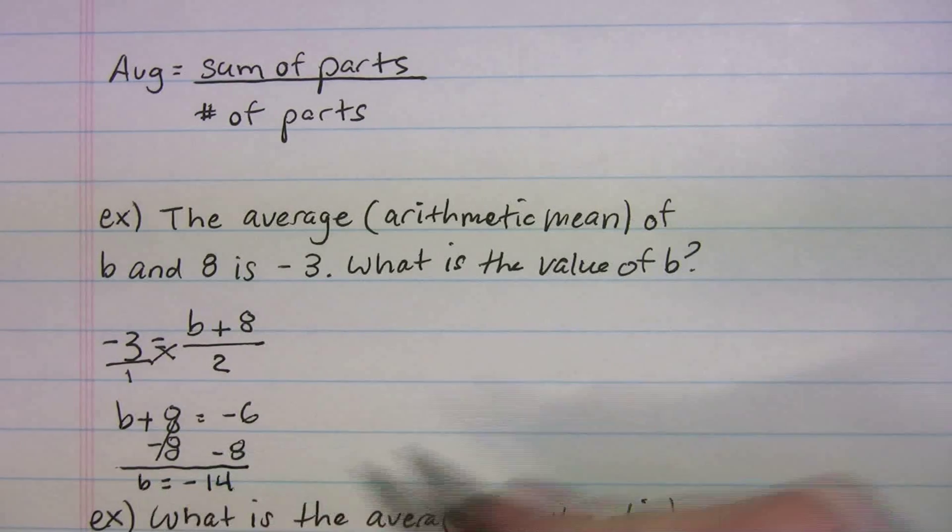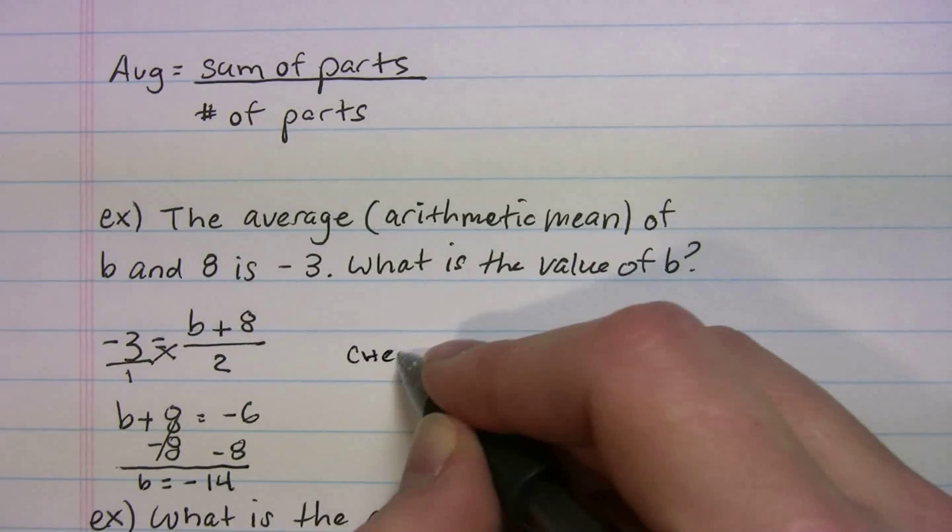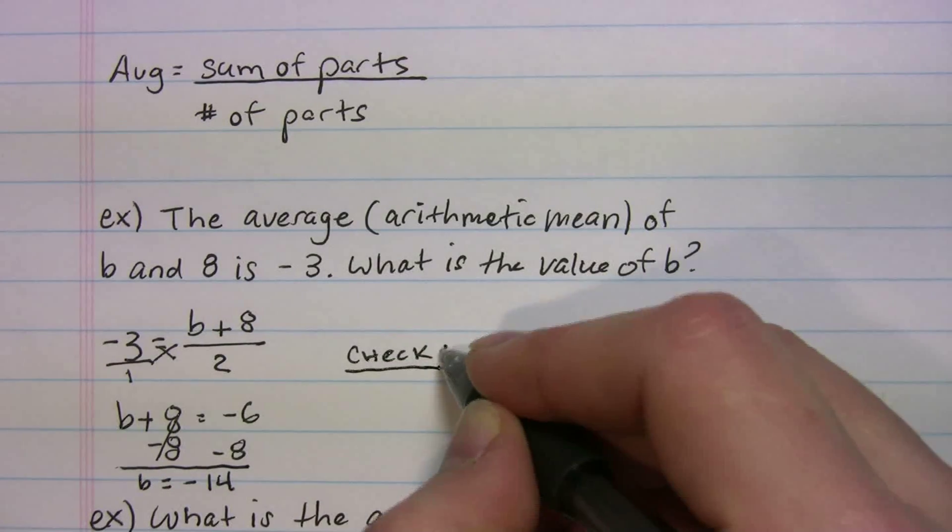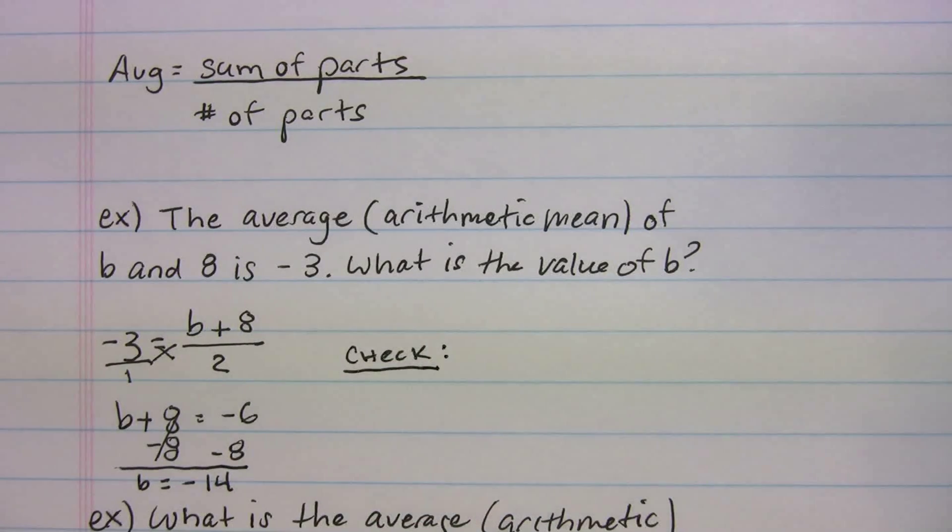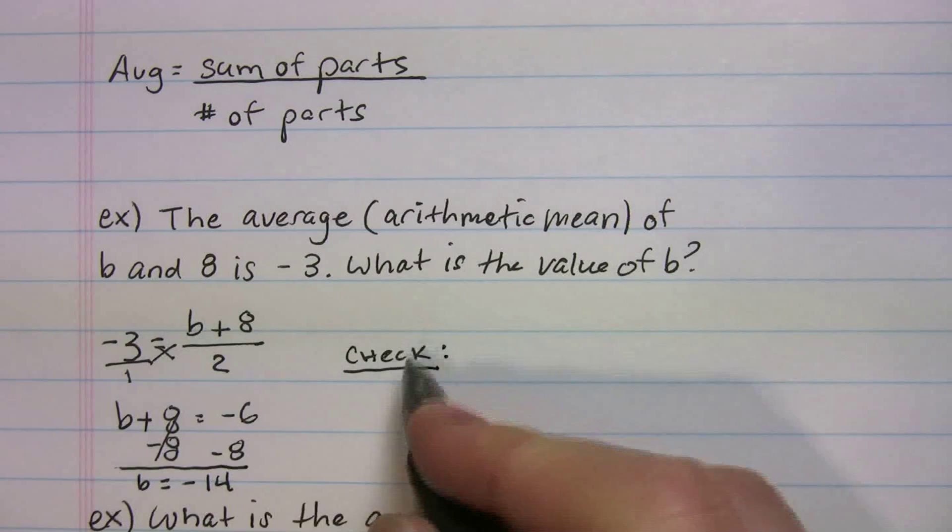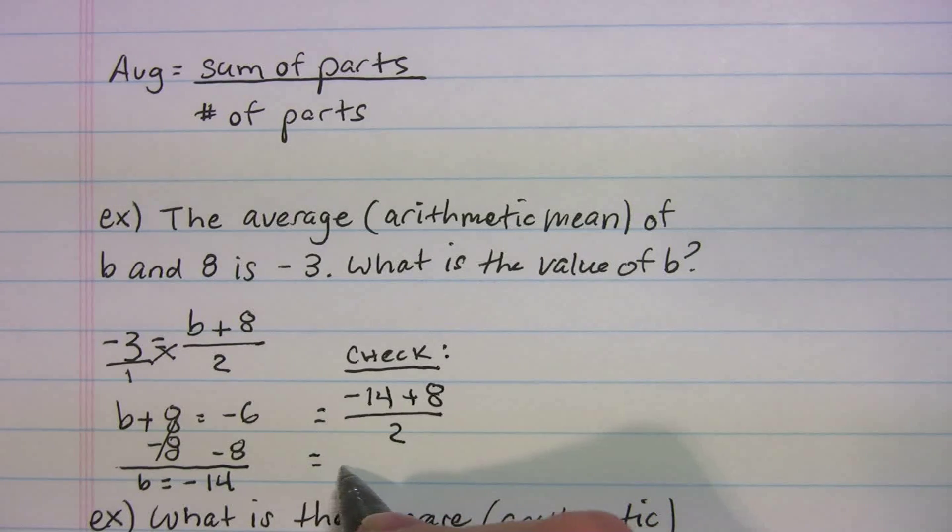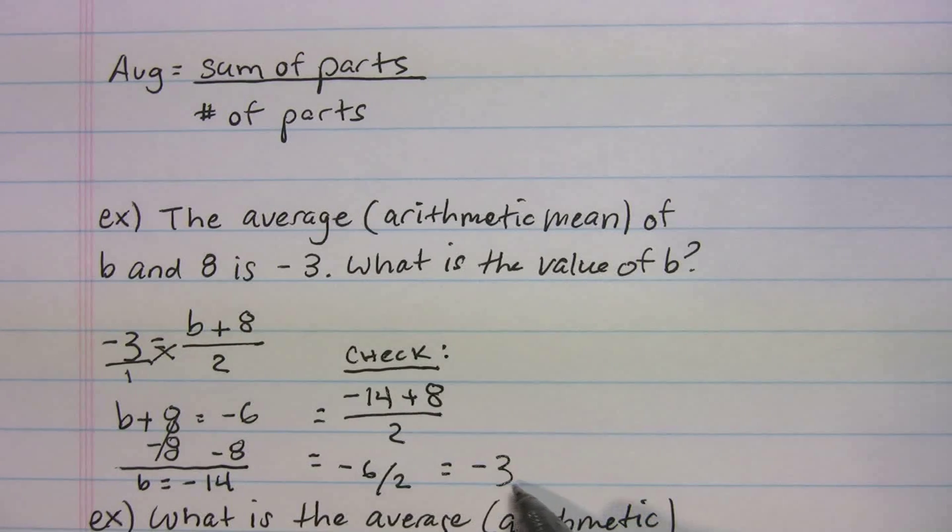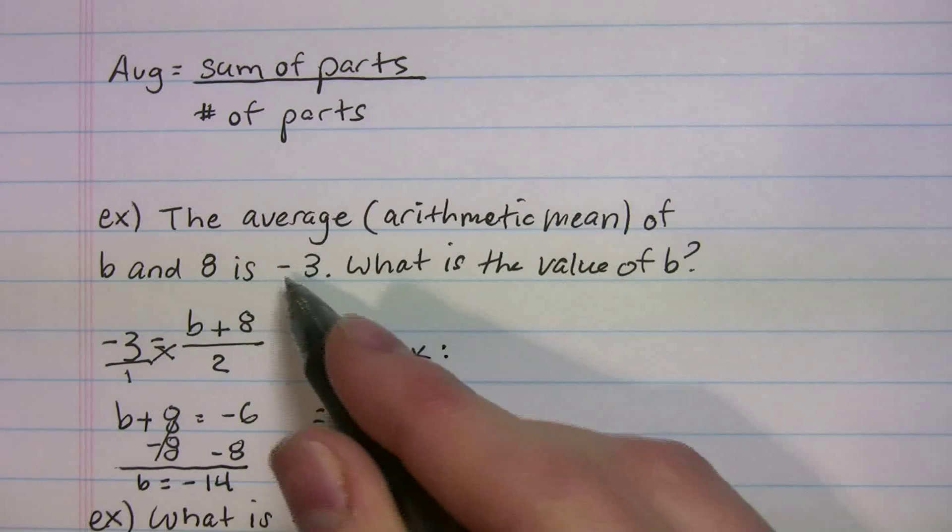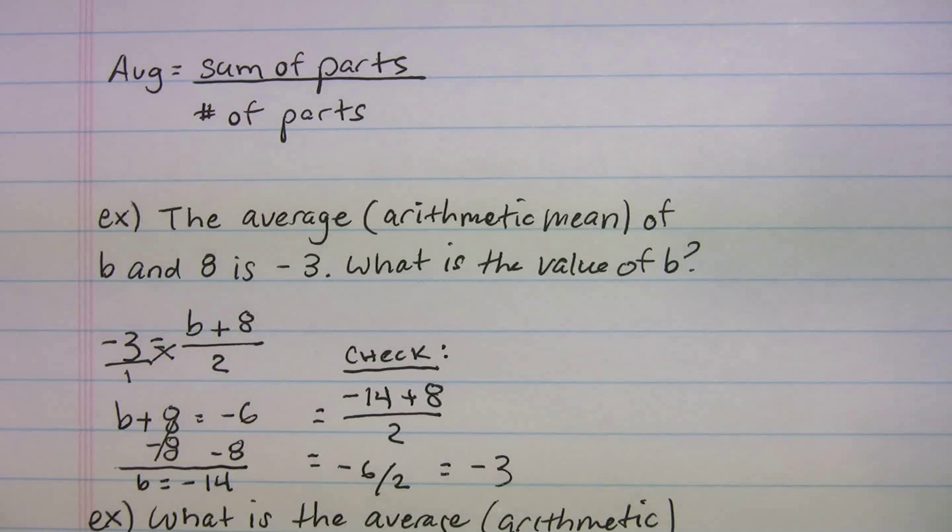Okay, so let's just check that to make sure. I know it's an easy problem, but we'll just check it real quick. So if b is negative 14, we're taking the average of negative 14 plus 8 divided by 2, we get negative 6 divided by 2, which equals negative 3. So that's the right answer. So I started you off with an easy one just to make sure you can plug into the average formula.